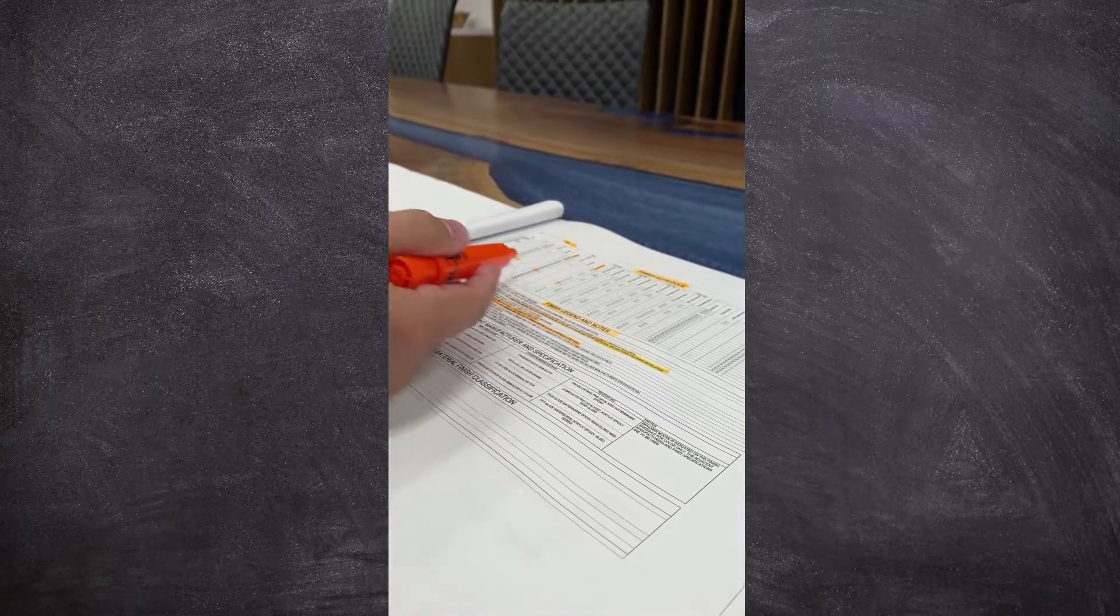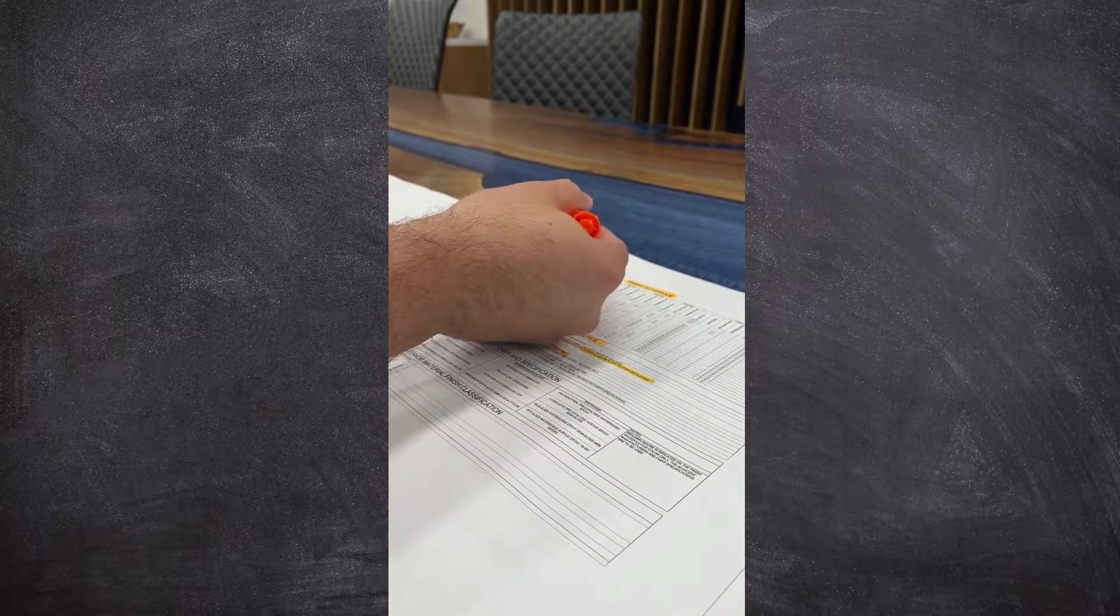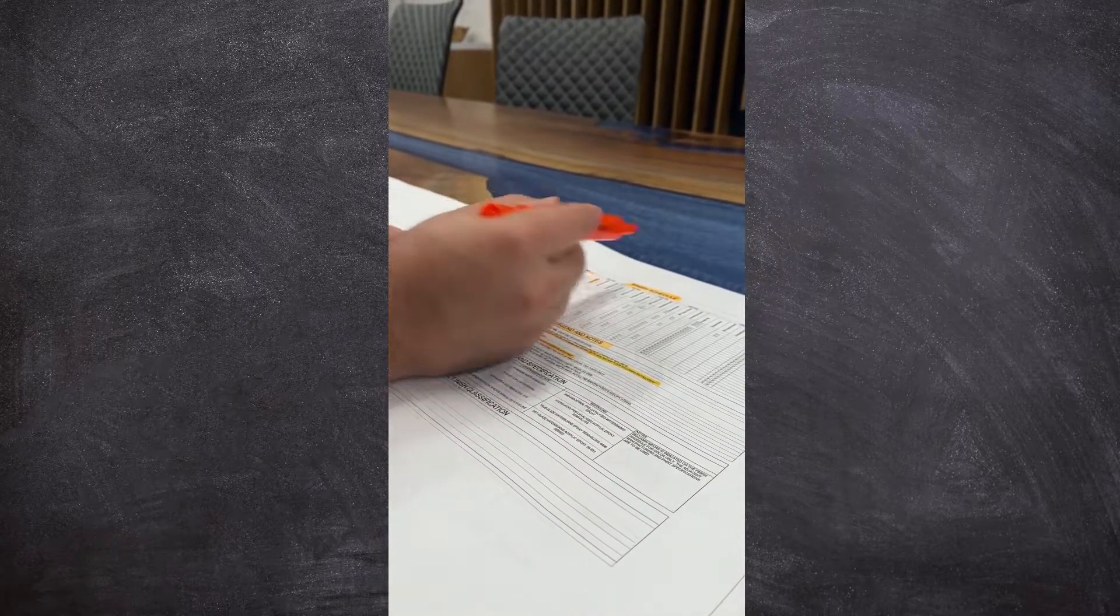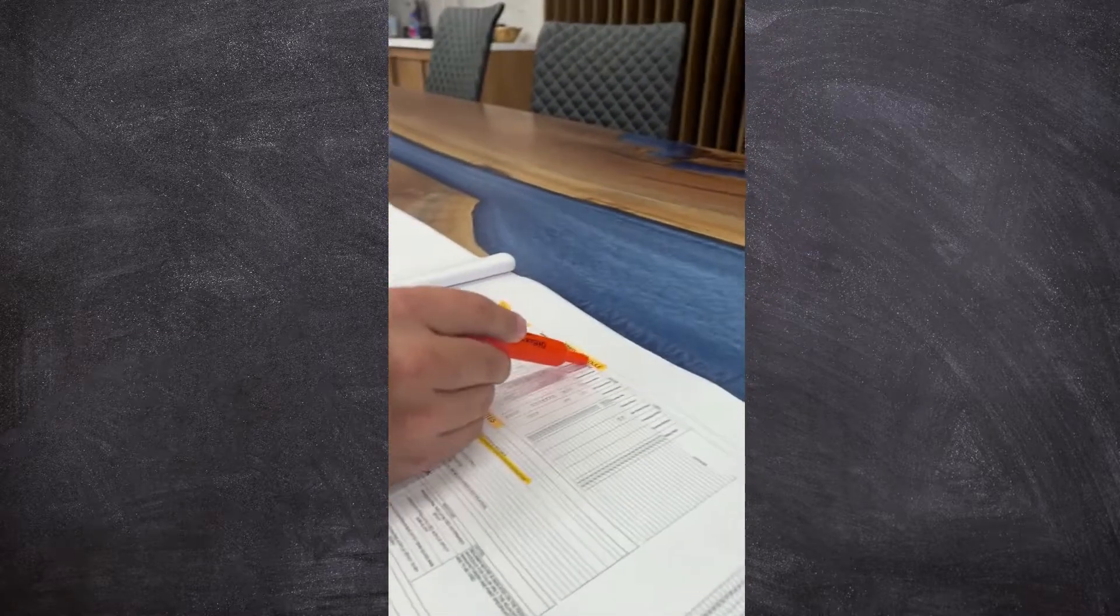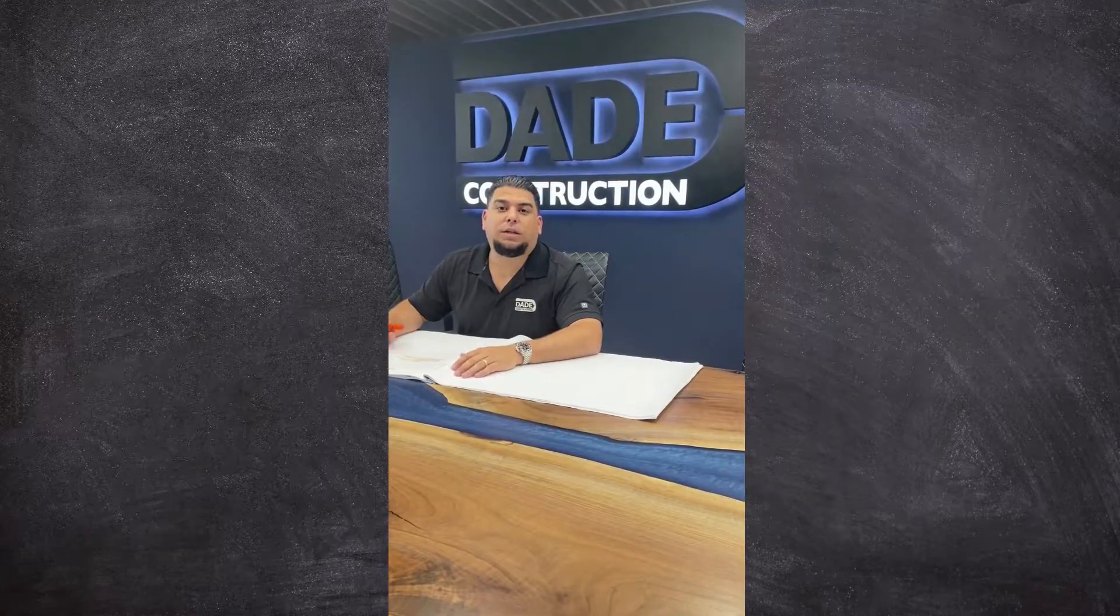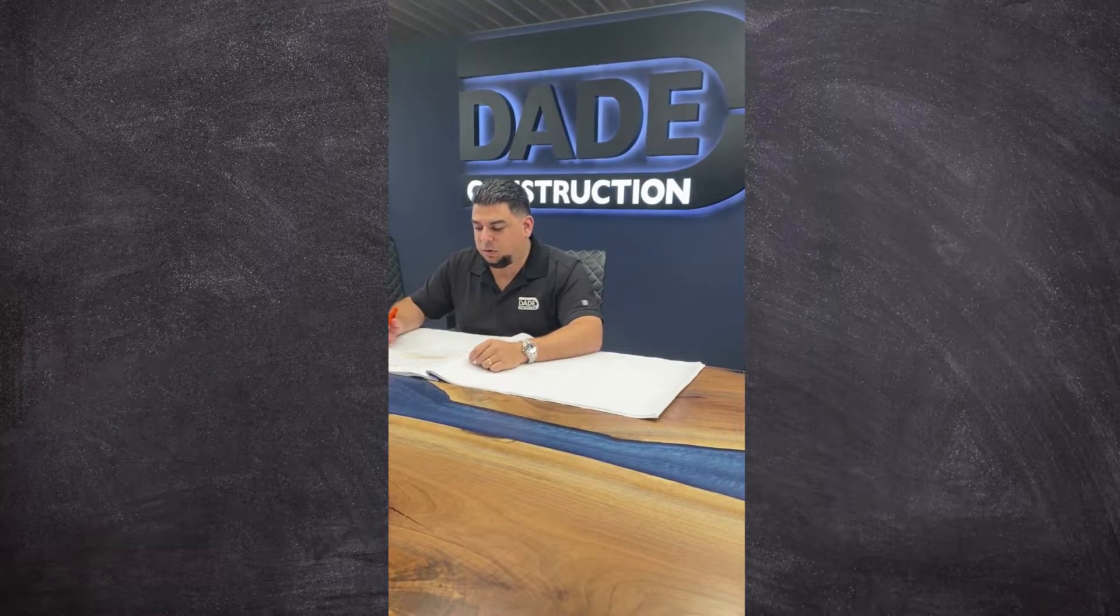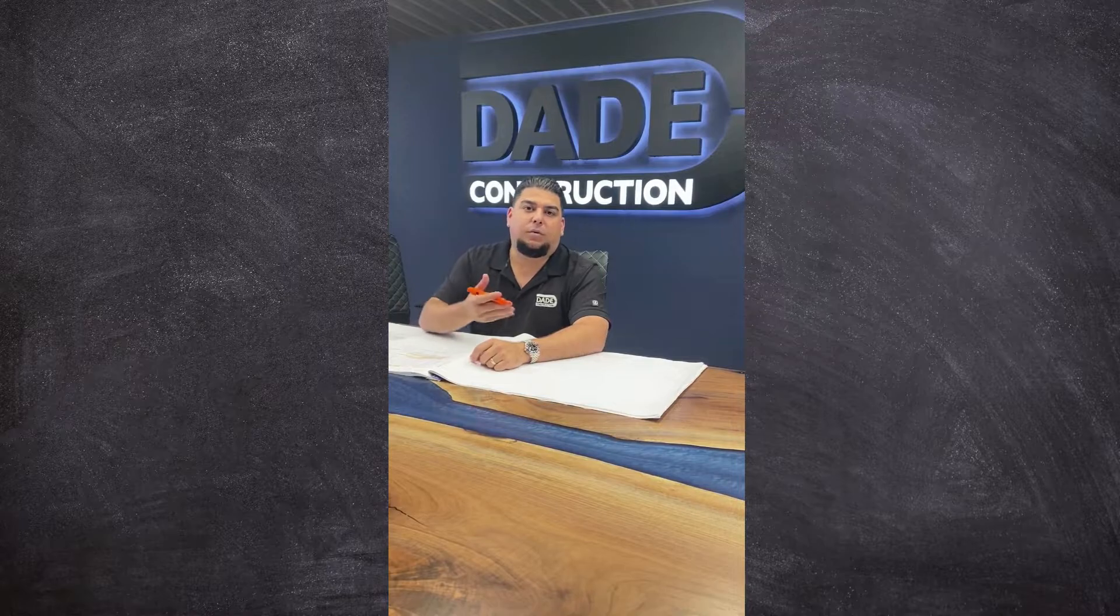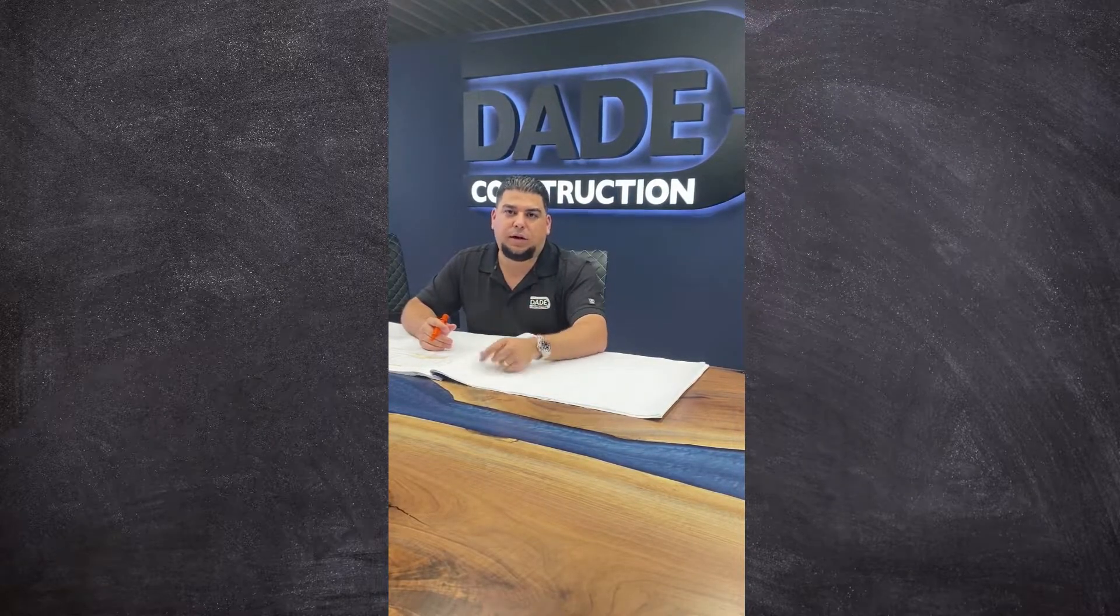The finish schedule will tell you your flooring, your base, the color of every single wall in the room, and your ceiling. Thank you for watching this week's episode of Plan Reading 101. We learned today about the finish schedule, the finish legend, and how to reference back on the floor plan. See you next week.